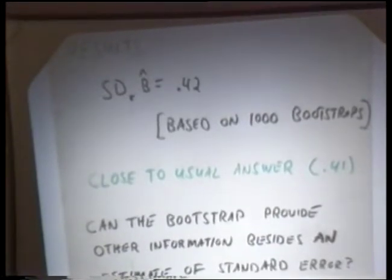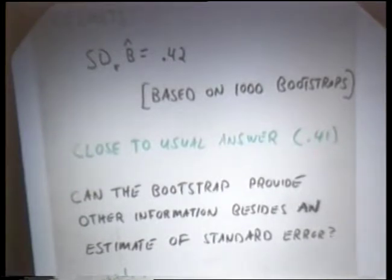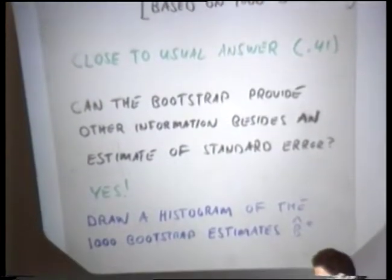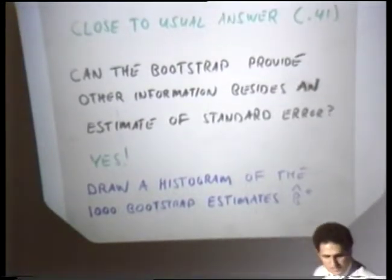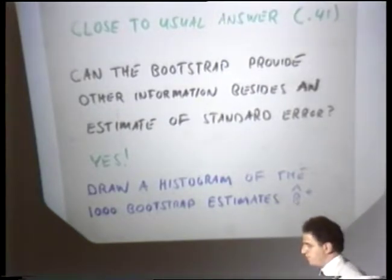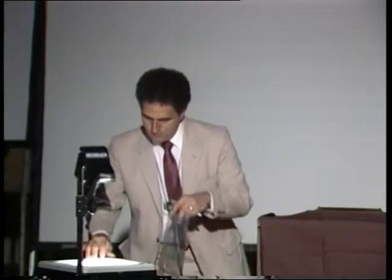But there is something else we can get. I just asked the question here: can the bootstrap provide other information besides an estimate of standard error? We've had hints of that already. Well, the answer is yes, and we can find out by drawing a histogram of the bootstrap values. So having done this 1,000 times, we get 1,000 bootstrap values of beta hat, and we simply plot a histogram of them.